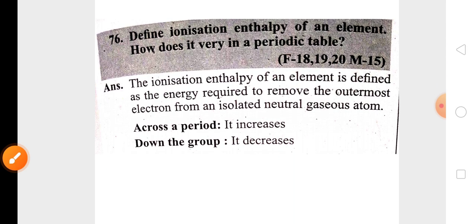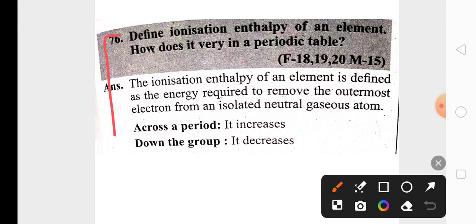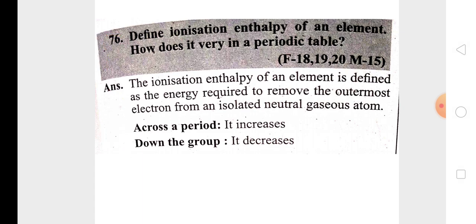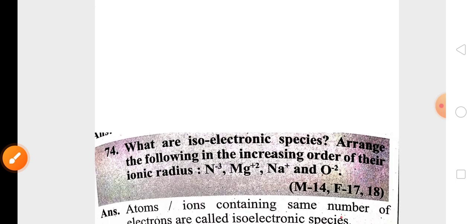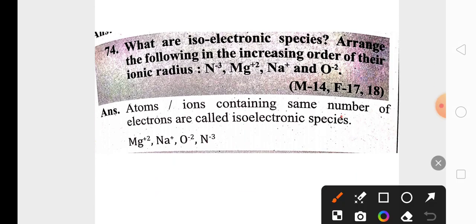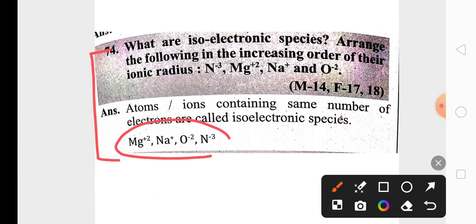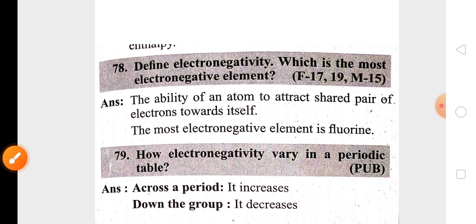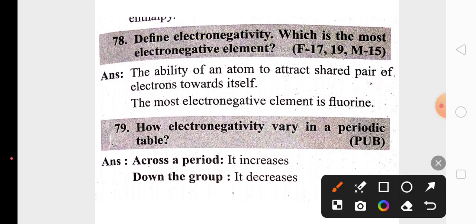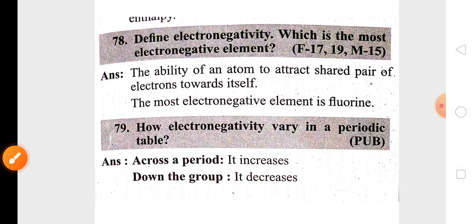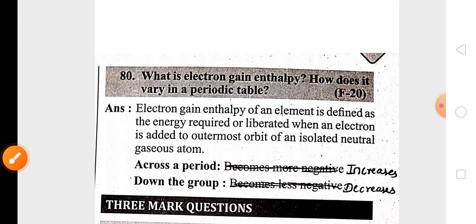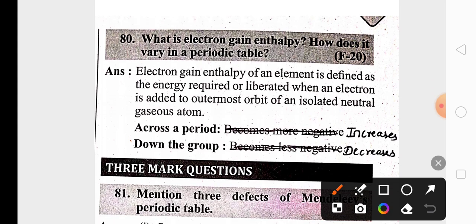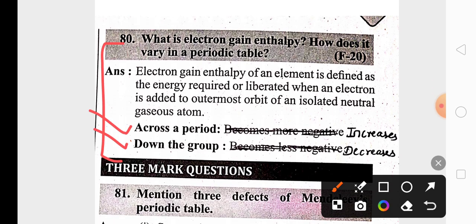Ionization enthalpy and its trend across the period and down the group is also very important for three marks. The definition of isoelectronic species and examples are highly important for two marks. Another periodic property is electronegativity — its definition and trend across the period and down the group is highly important. Electron gain enthalpy and its trend is also important for three marks — any one periodic property you will definitely get.